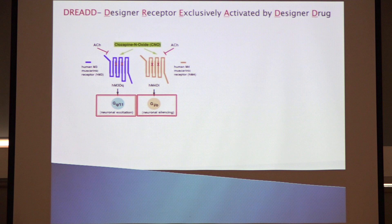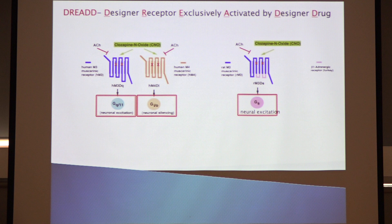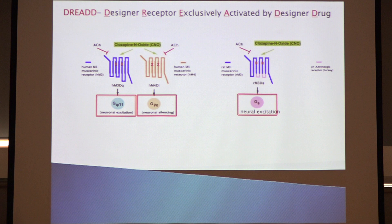More recently there are also GS-coupled excitatory DREADs, and work on other variants. The original generation was done off the kappa opioid receptor — same concept, mutated so it no longer responds to opiates but responds to synthetic kappa opioids. That first version had some problems, but now it's getting as good as CNO. So you could have two channels of control: one population controlled by CNO and another by the kappa opioid ligand.